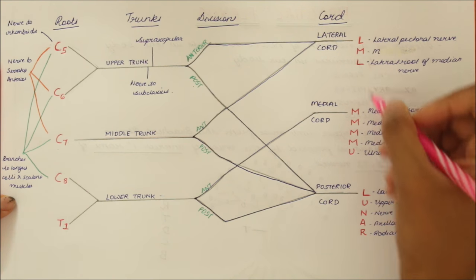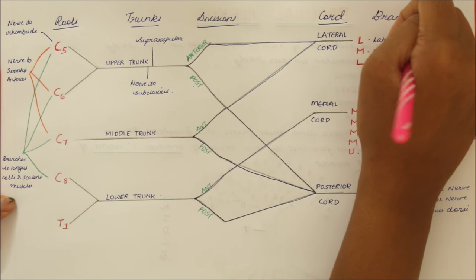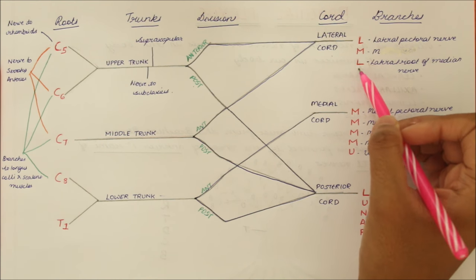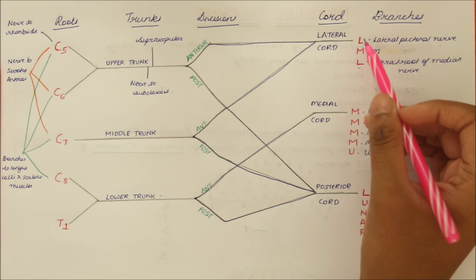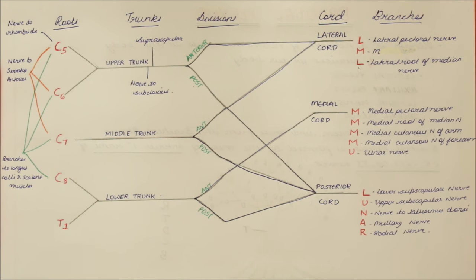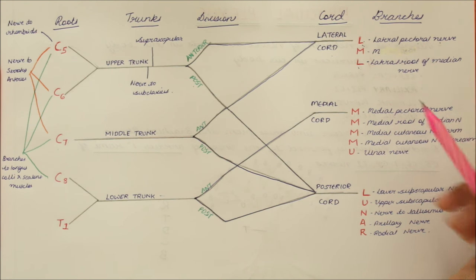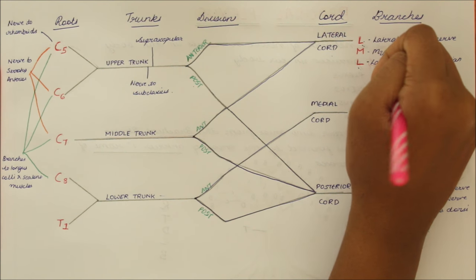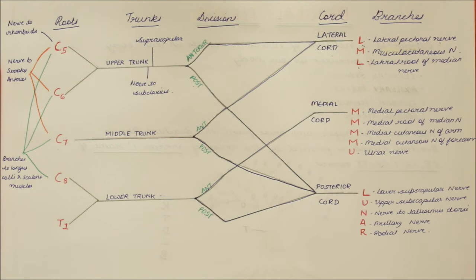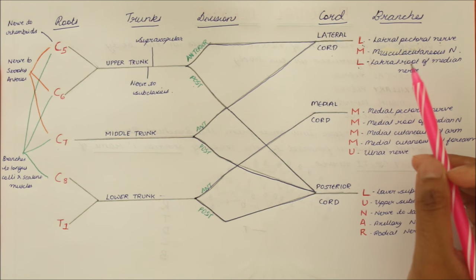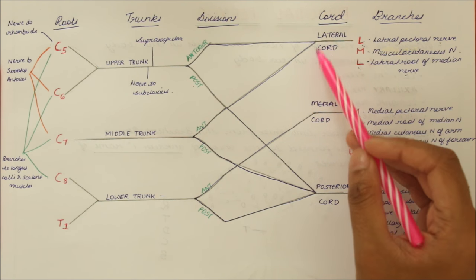From the lateral chord we have 3 branches: L, M, L. An easy way to remember this is by using the mnemonic 'love me lots.' The first L stands for the lateral pectoral nerve, M stands for the musculocutaneous nerve, and the second L stands for the lateral root of the median nerve.